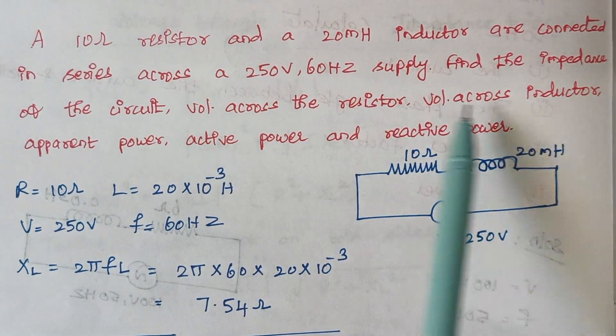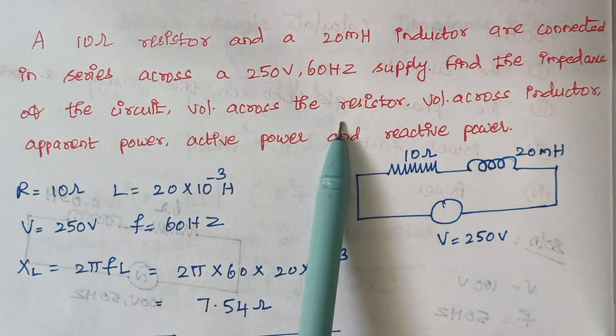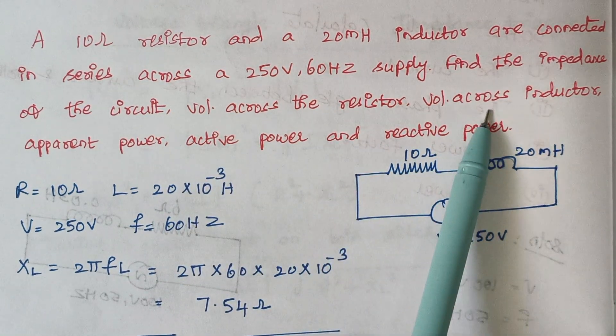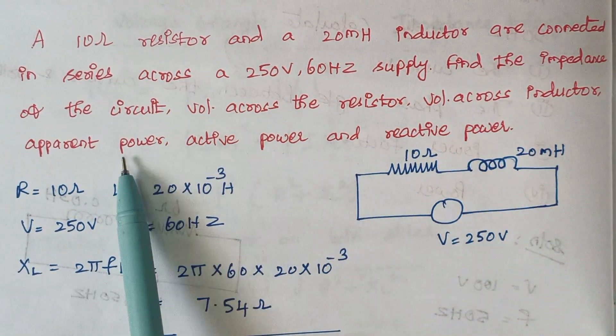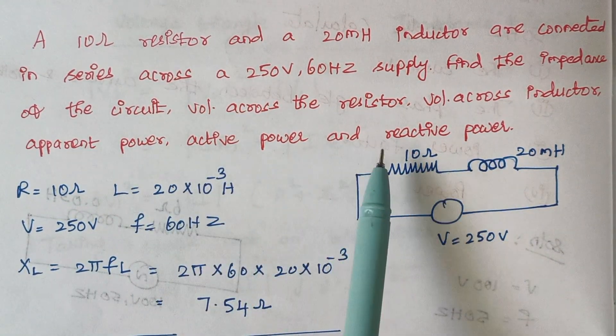Find the impedance of the circuit, voltage across the resistor, voltage across the inductor, apparent power, and active power.